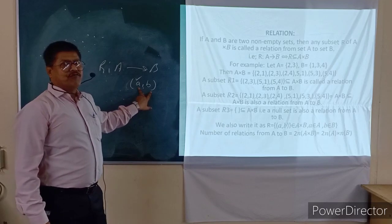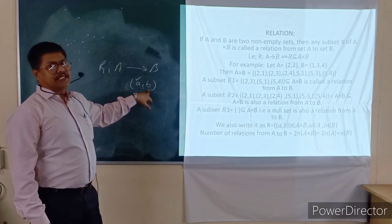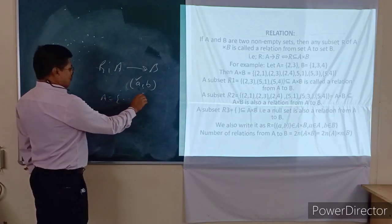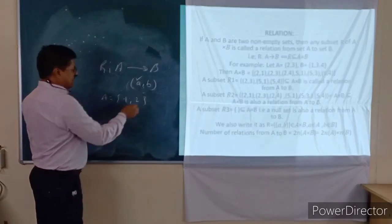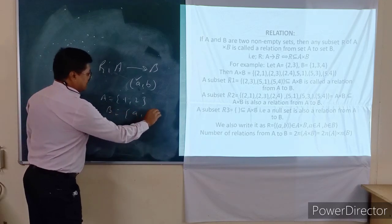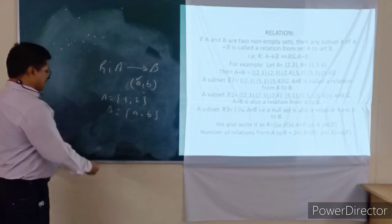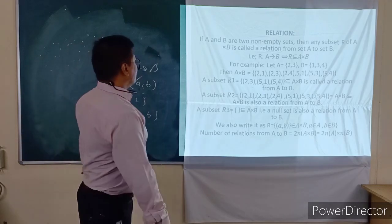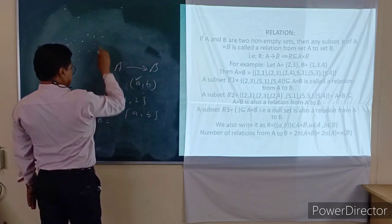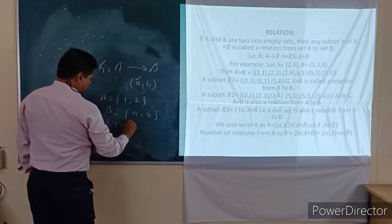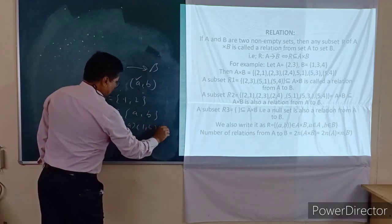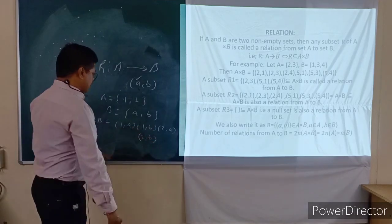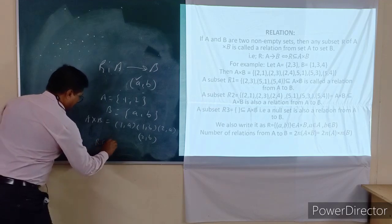A is the first component and B is the second component. Now A and B are two sets. Suppose set A is {1, 2} and set B is {A, B}. Now we want to write down the Cartesian product between A and B. So A cross B gives us: (1,A), (1,B), (2,A), and (2,B). These are all the possible ordered pairs, and the relation belongs to A cross B.